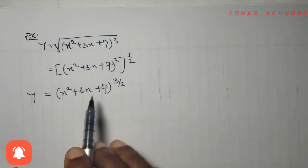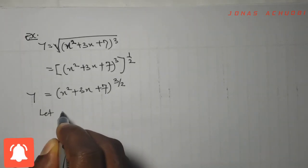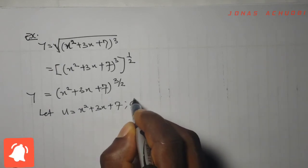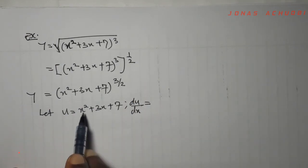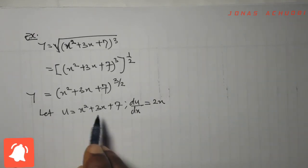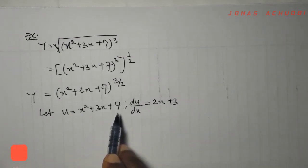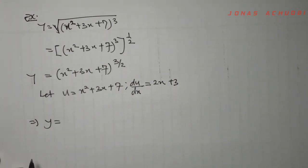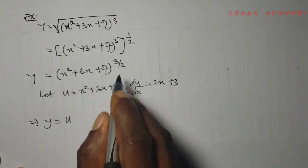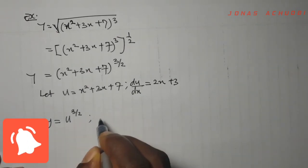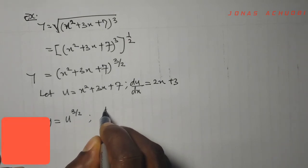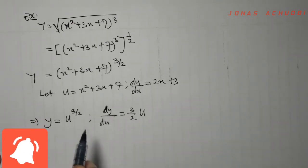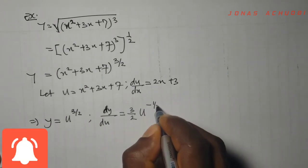So I call the inner function again: let u equal x² + 3x + 7. We differentiate — du/dx — differentiating x² gives 2x, differentiating 3x gives 3, and 7 is a constant so it gives 0. Thus du/dx = 2x + 3. The function now becomes y equal to u^(3/2). So dy/du equals (3/2) u^(1/2 − 1) = (3/2) u^(−1/2).